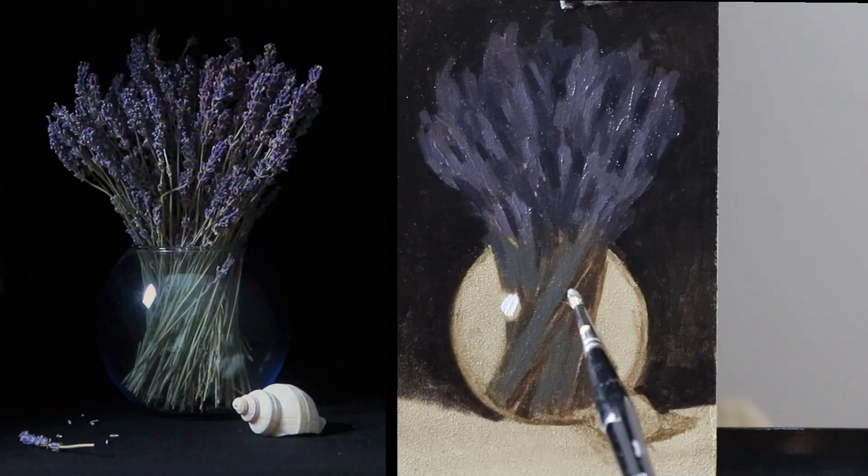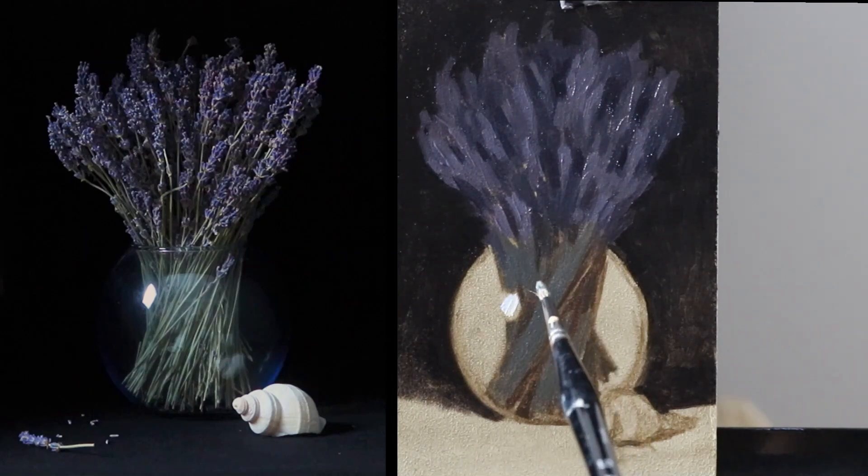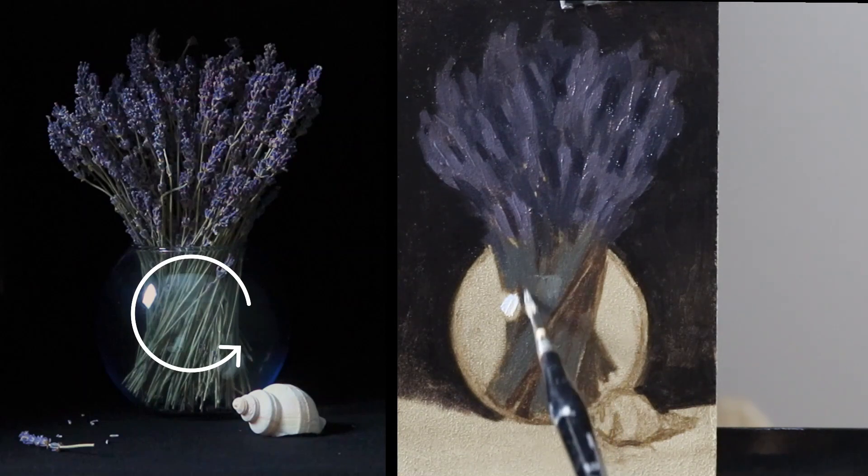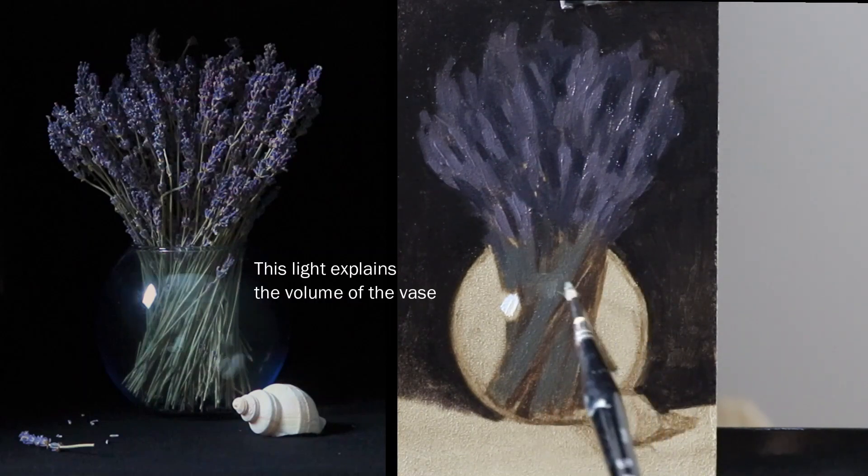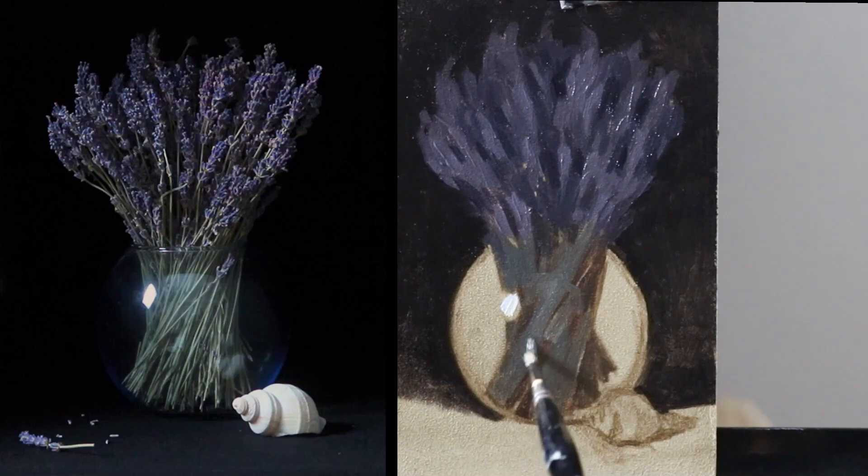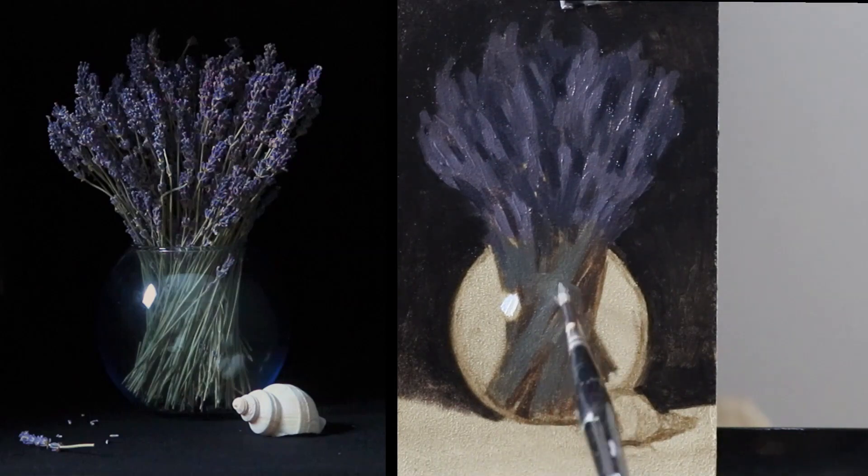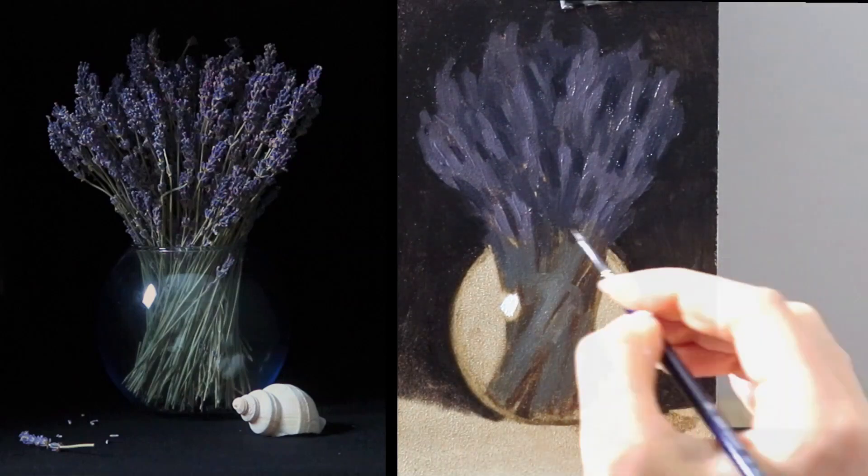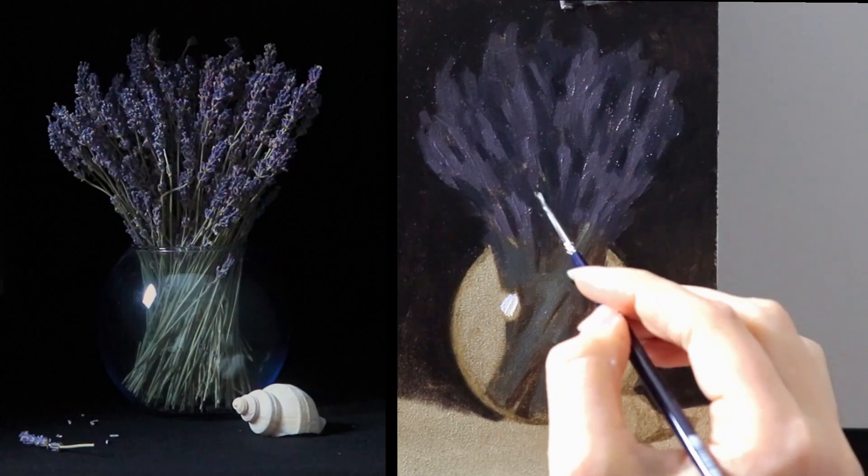Before I paint the brightest value in the stems I add in the reflected light happening on the right side of the highlights. This light explains the round volume and shape of the vase. To decide the contrast relationship between this shape and the shapes around it is a good one to explore in the study. This will help you determine how strong or subtle the shape really is.